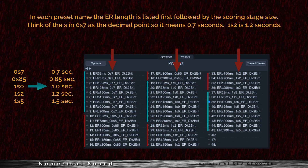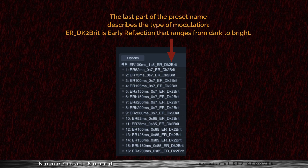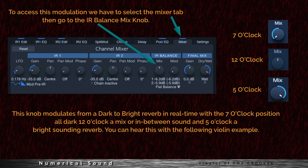The last part of the preset name describes the type of modulation. The ER dark to bright is the early reflection ranging from dark to bright. To access this modulation, select the Mixer tab, then go to the IR balance mix knob. This knob modulates from dark to bright in real time — with the 7 o'clock position all dark, the 12 o'clock position a mix or in-between sound, and at 5 o'clock a bright sounding reverb. You can hear this effect with the following violin example.